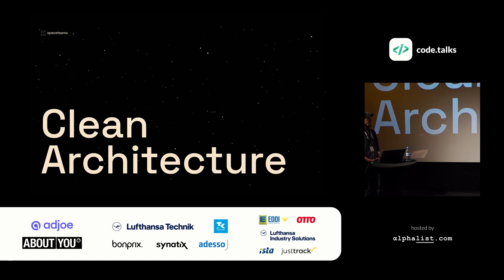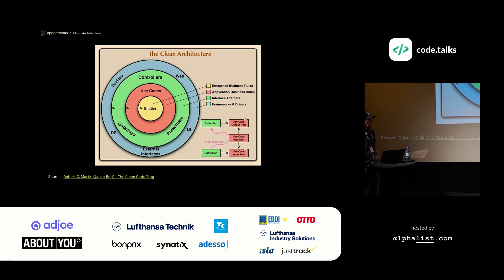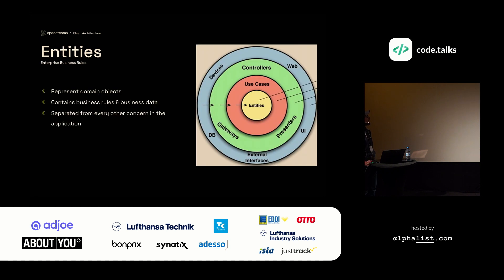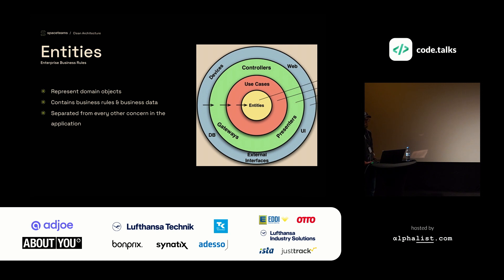To avoid something like this, you can use an architectural pattern like clean architecture, for example. You can see this diagram here. It consists of four layers. Right in the center, we have our entities — these are our enterprise business rules, and this layer represents our domain objects. It contains only business rules and business data, and it is totally separated from the rest of the application.